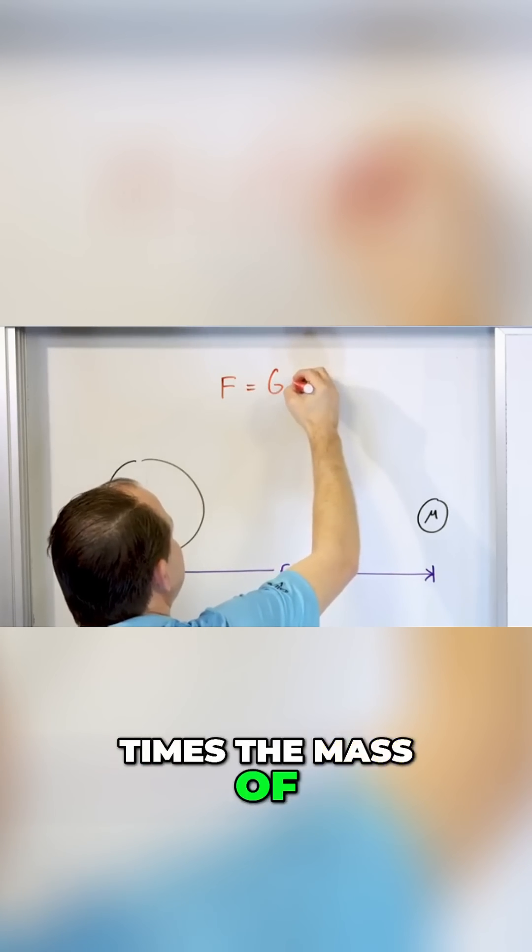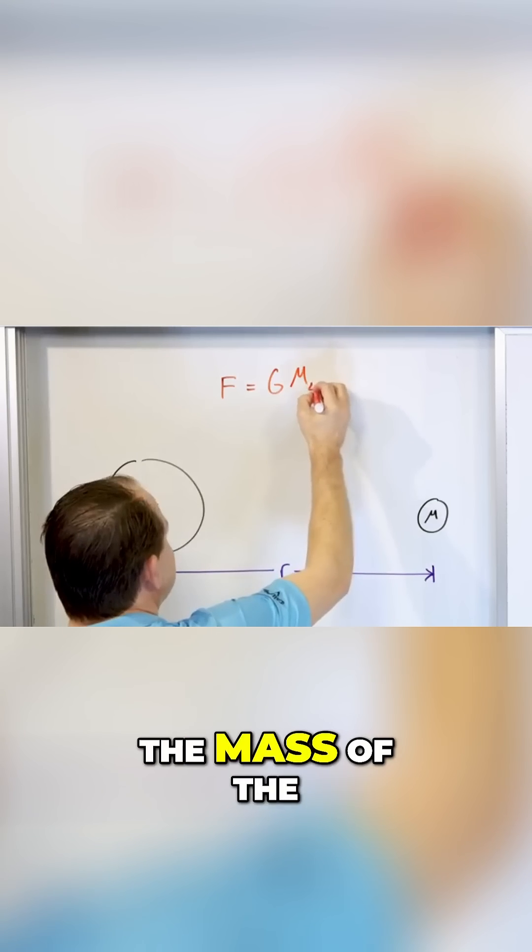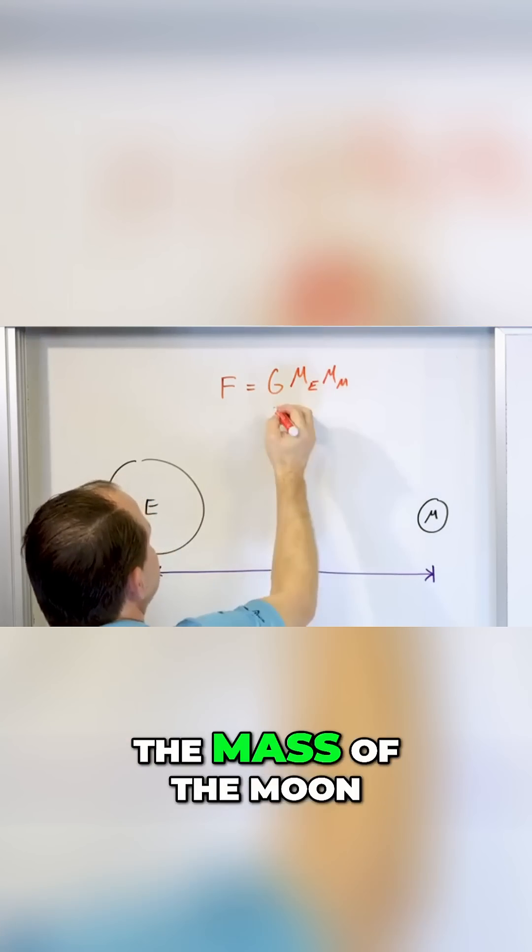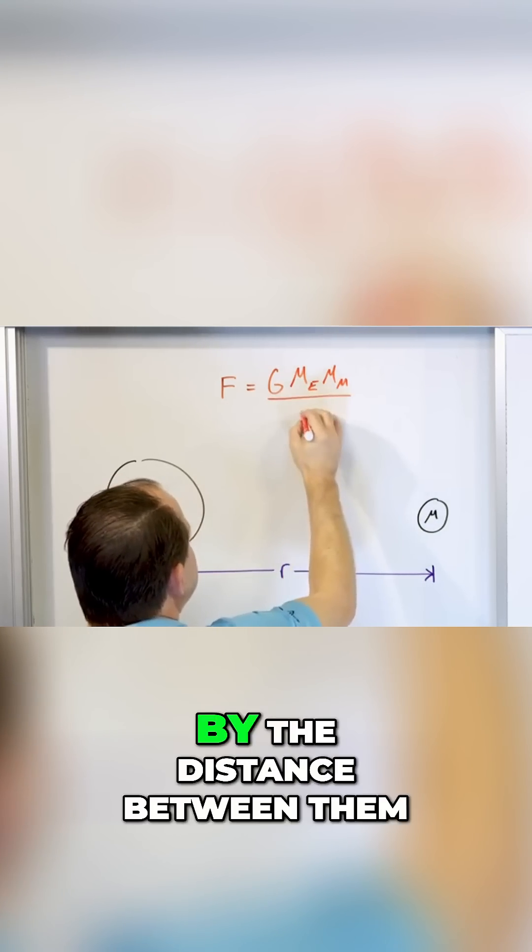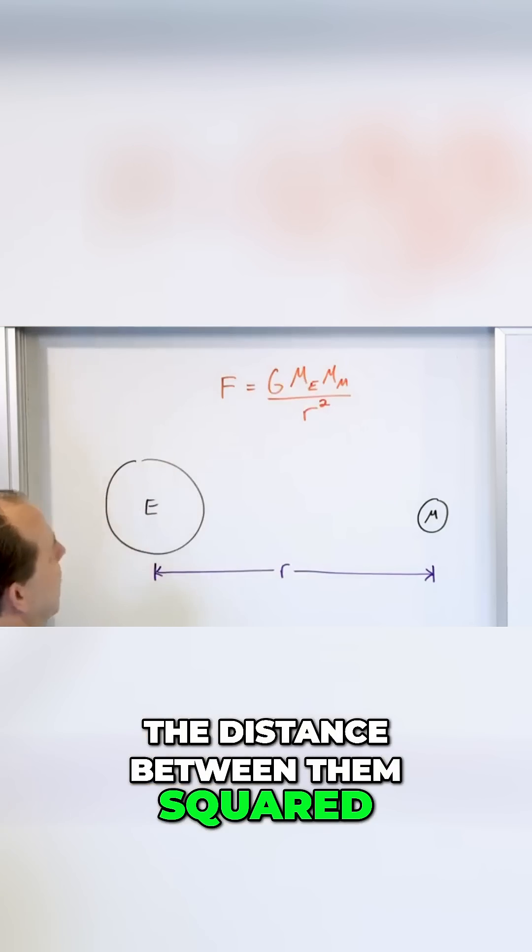times the mass of the two bodies. So in this case, since we have the Earth and the Moon, it's going to be the mass of the Earth times the mass of the Moon. So this is the mass of the Earth, the mass of the Moon, but then it's divided by the distance between them, but not just the distance between them, the distance between them squared.